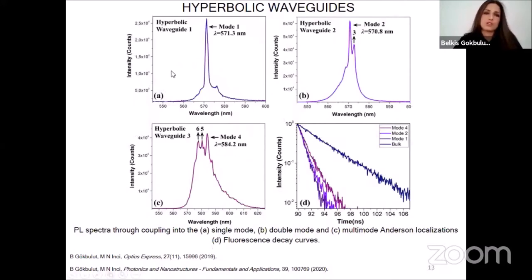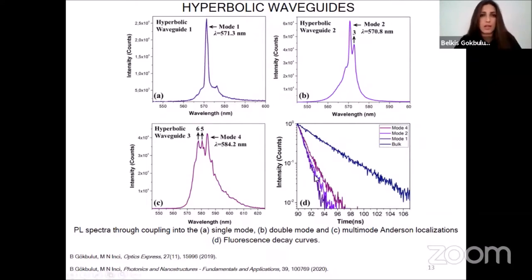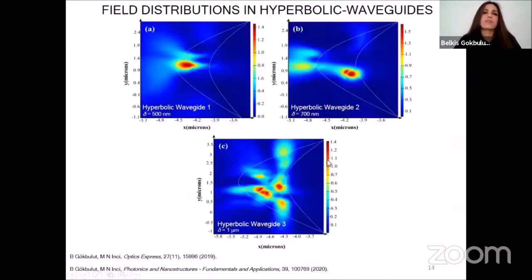The PL spectra of the dye molecules coupled into single mode, double mode, and multimode Anderson localizations in hyperbolic optical waveguides are demonstrated. Each waveguide has specific optical and geometrical properties to have distinctive guidance mechanisms for Anderson localized modes. The fluorescence decay curves of the excited emitters coupled into Anderson localized cavities in hyperbolic optical waveguides and also in bulk material are demonstrated. An obvious change in the characteristics of the decay populations of the emitters coupled into Anderson localized modes, with reference to emitters in bulk material, is clearly seen. The electric field distribution profiles of dipoles coupled into single mode, double mode, and multimode Anderson localizations in hyperbolic optical waveguides also confirm our experimental results.